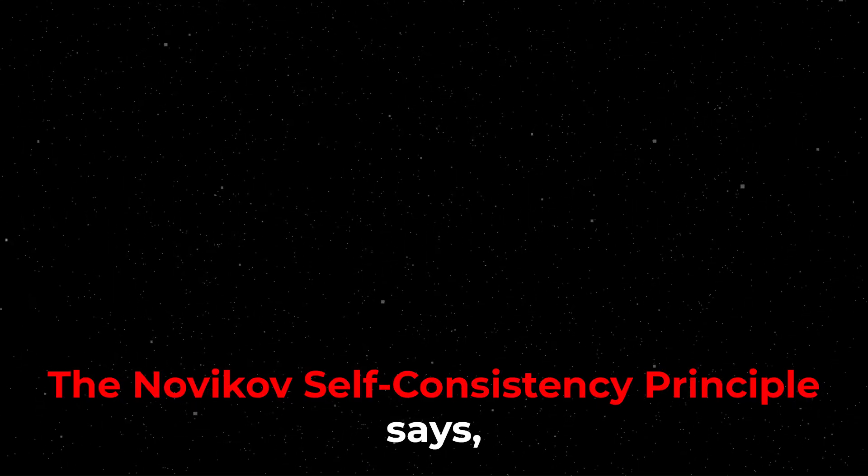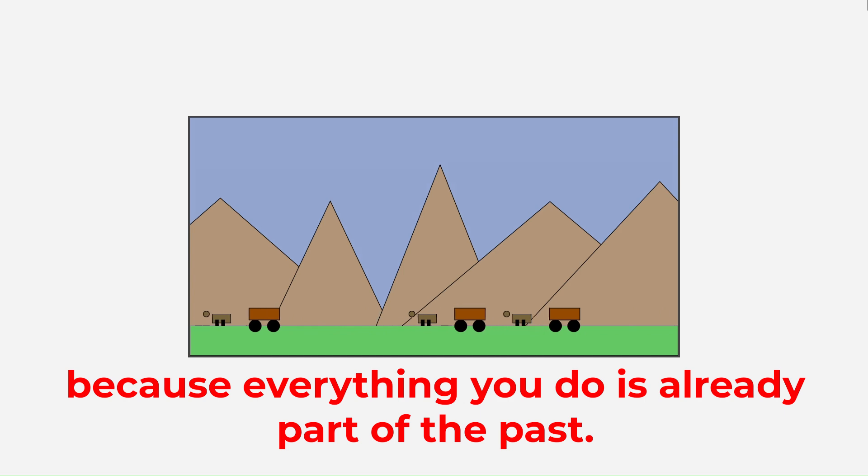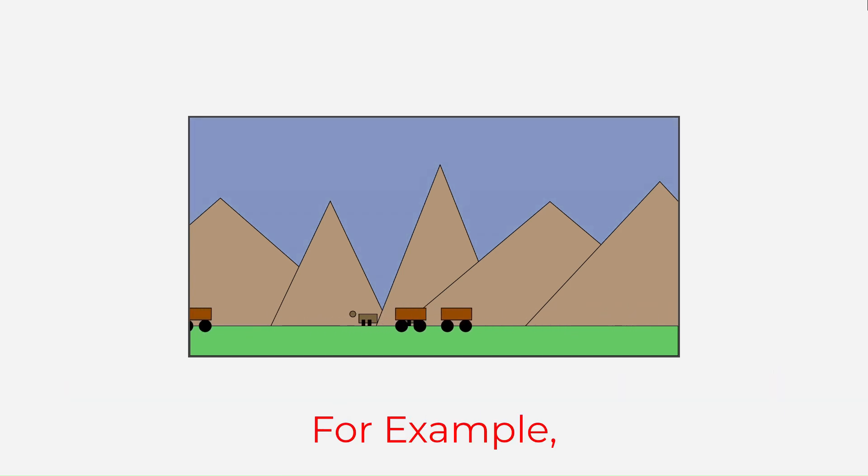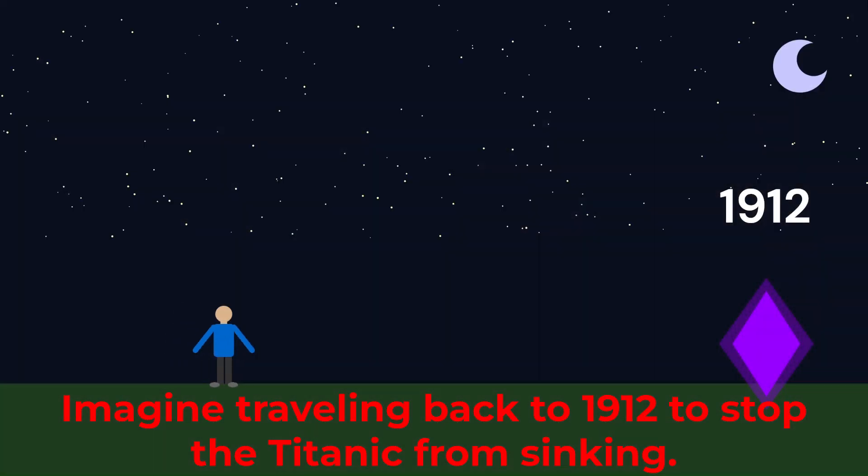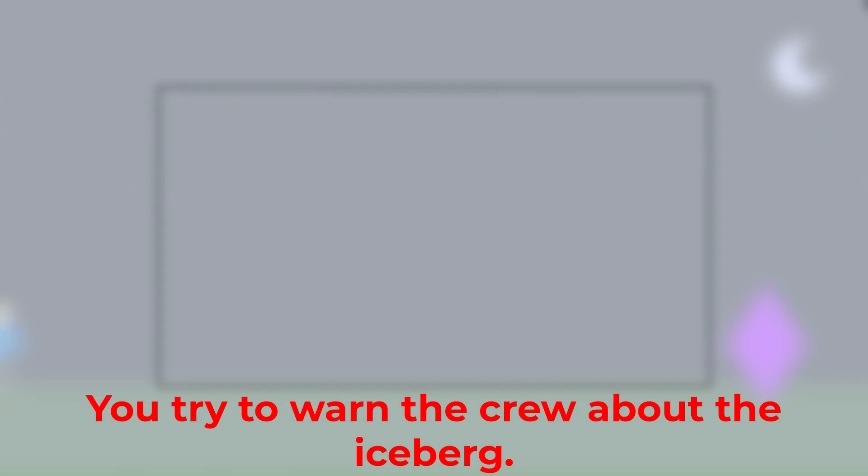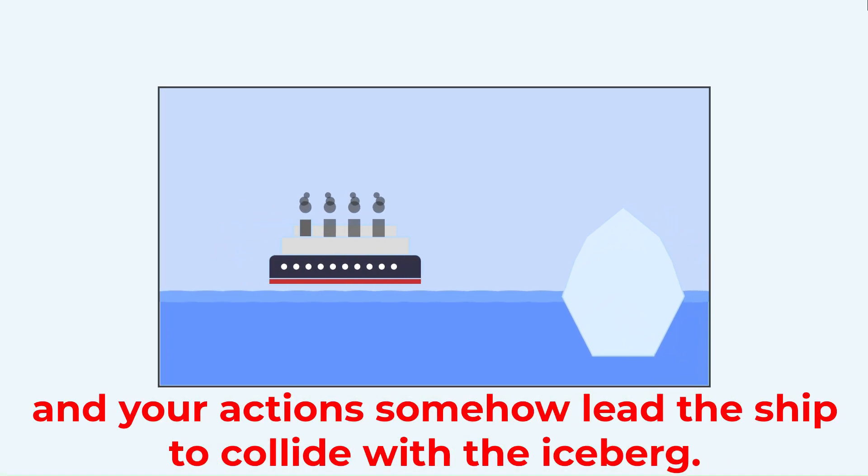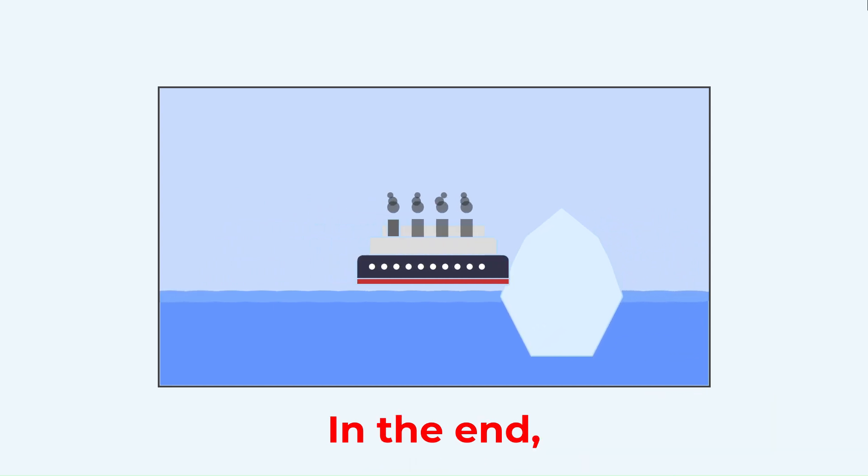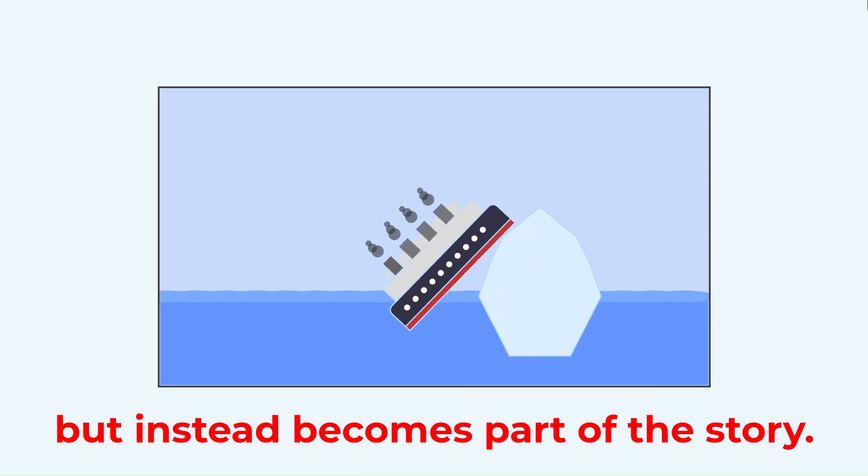The Novikov self-consistency principle says you can travel back in time, but you can't change the past because everything you do is already part of the past. For example, imagine traveling back to 1912 to stop the Titanic from sinking. You try to warn the crew about the iceberg. However, your warnings are misunderstood or ignored, and your actions somehow lead the ship to collide with the iceberg. In the end, your presence in the past doesn't change the event but instead becomes part of the story.